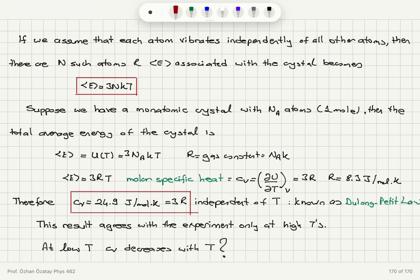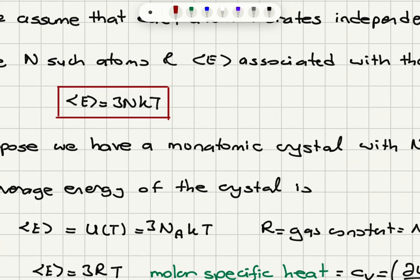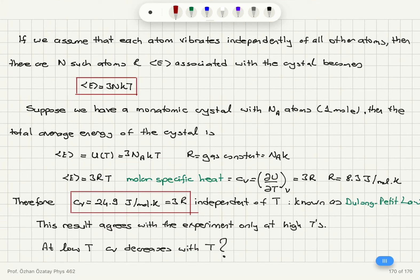For N atoms, if they are vibrating independently of each other, the average energy will be 3 capital N kt. If I have a monatomic crystal with Avogadro's number of atoms, so I have one mole, the total average energy would be 3 Avogadro's number kt. Avogadro's number times Boltzmann constant is the gas constant, universal gas constant. It has a value 8.3 joules per mole Kelvin. So the average energy is 3RT. Then the molar specific heat, the specific heat of one mole, is 3R.